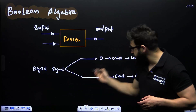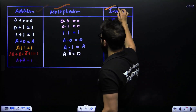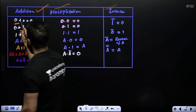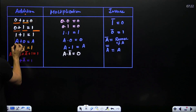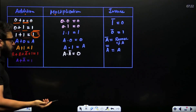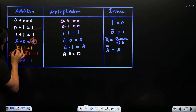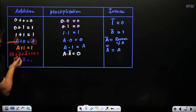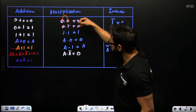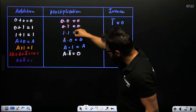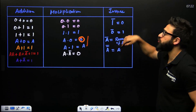Now, in case of Boolean algebra, let's talk about addition, multiplication, and inverse. For addition: zero plus zero is zero, zero plus one is one, one plus one is one (high plus high is high). Low plus high is high. A plus zero is A, A plus one is one — where A can be either zero or one. For multiplication: low into low is low, zero into one is zero, one into one is one, A into zero is zero, A into one is A.